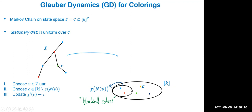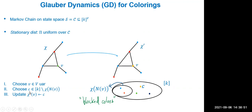Suppose the colors occupying the neighbors are blue and red — that's the block set — and the big ellipse represents all available colors. The algorithm samples a color c uniformly at random from K minus chi(N(v)), the colors outside the block set. For example, if yellow is chosen, the algorithm updates vertex v to yellow. So we update only the selected vertex using a randomly chosen non-blocking color.